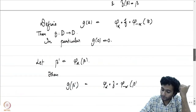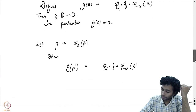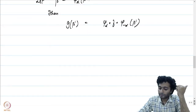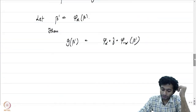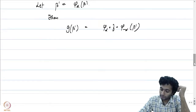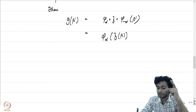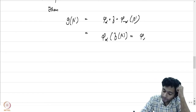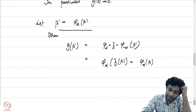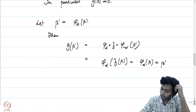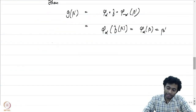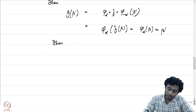g(beta') = phi_alpha ∘ f ∘ phi_{-alpha}(beta'). Now phi_{-alpha}(beta') = beta, so this equals phi_alpha(f(beta)). But beta is a fixed point of f, so this equals phi_alpha(beta) = beta'. Therefore g(beta') = beta'.